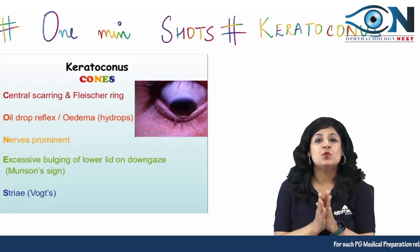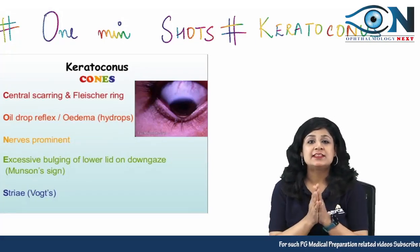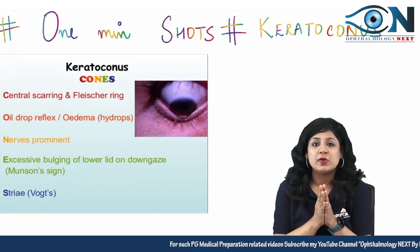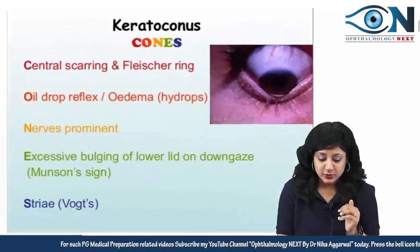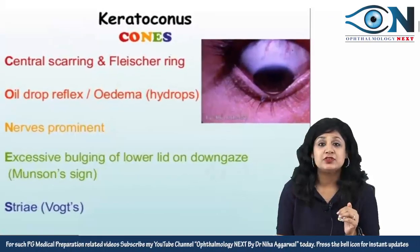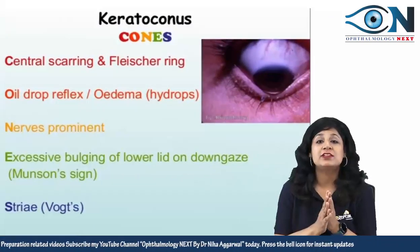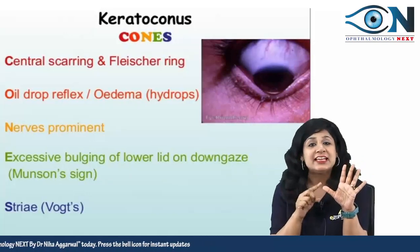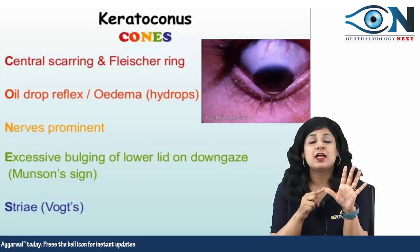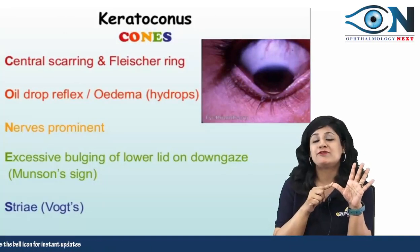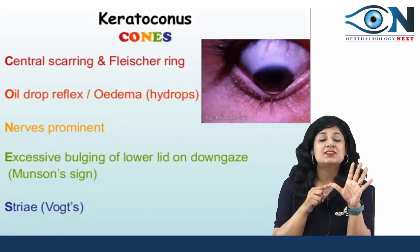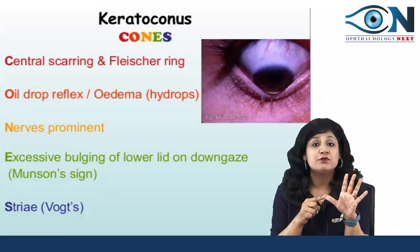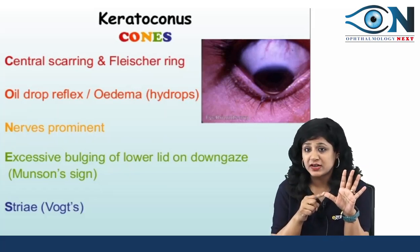Hello guys, welcome to One Minute Shots. Here we are going to deal with the features of keratoconus. You can remember the features of keratoconus by the mnemonic CONES. C stands for central scarring, and over that we have Fleischer's ring, due to the base of the cone showing the deposition of hemosiderin.